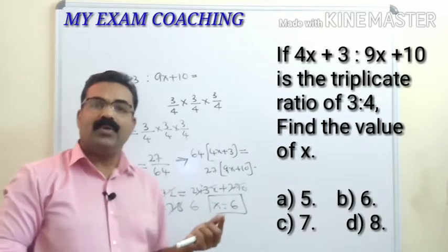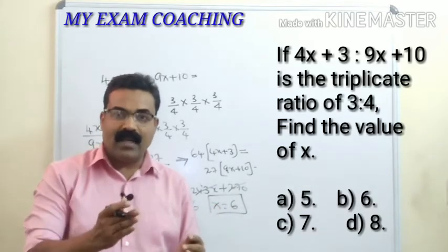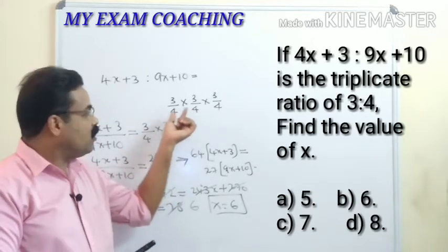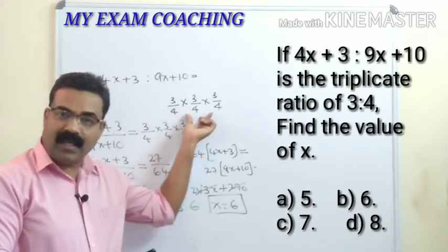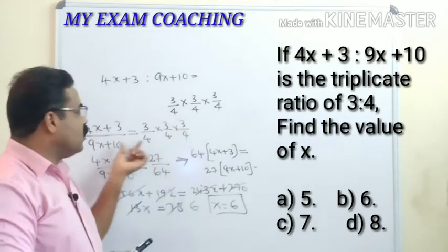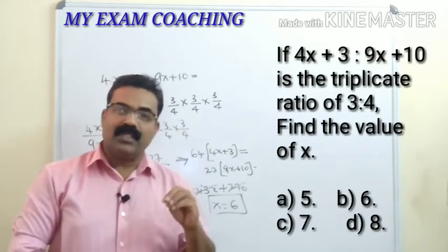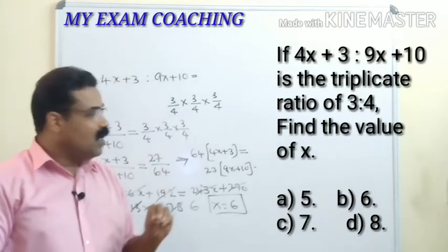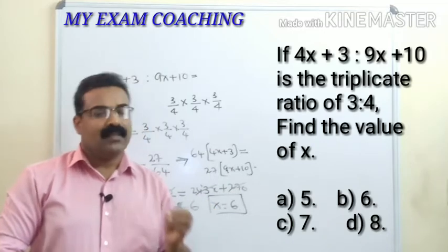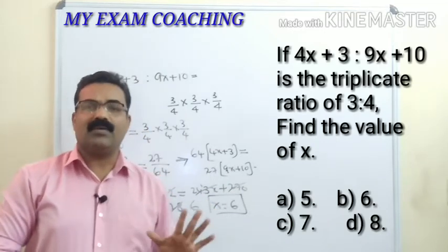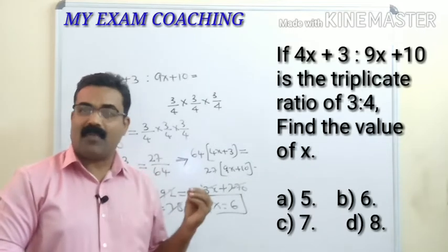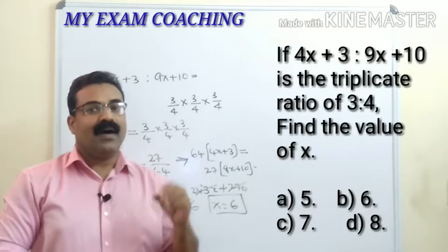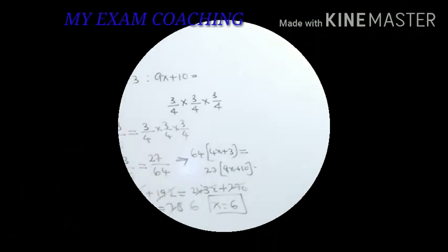Simplification becomes very easy once you practice. The main concept here is understanding what is the triplicate of a ratio — multiply it three times, equate it with the given ratio, and find x. This type of question is very easy once you understand the concept. Practice 3–4 such questions and you can approach any question from this topic.